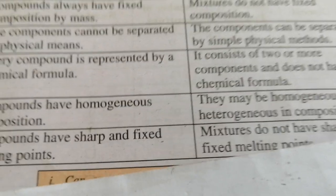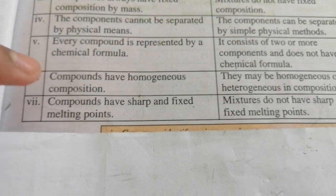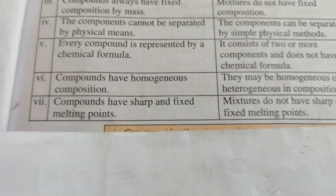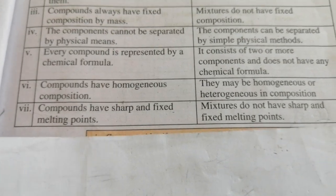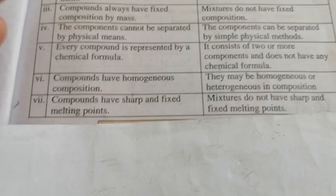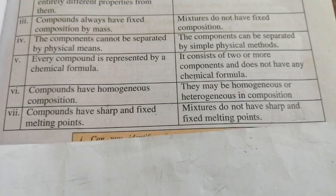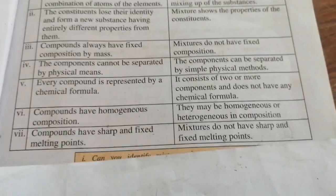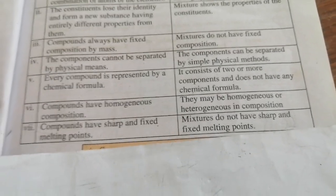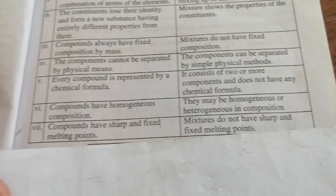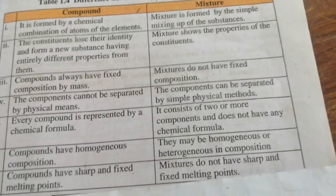Compounds have a fixed and sharp melting point. But in a mixture, there is no sharp or fixed melting point. For example, a fruit chart has no defined melting point. You can see many examples of mixtures where there is no fixed melting point, while compounds always have a fixed melting point.